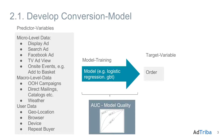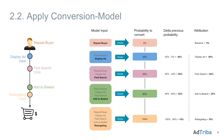Once that AUC metric is over a certain threshold, we can use that model for doing the attribution. Usually it takes about two to six weeks until we have a model of high enough quality. The attribution basically consists of applying that conversion model to all the customer journeys we want to attribute — for example all conversions that happened yesterday — in a smarter way than just applying last click, first click, or any other static model. We take a particular customer's journey and calculate the conversion probability at every step of that journey.